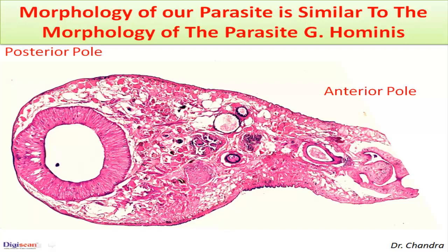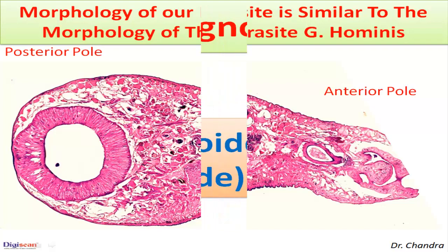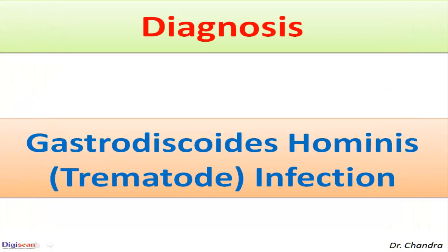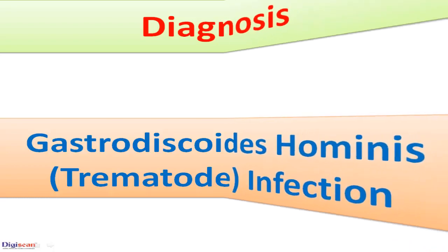Based on the similarity of structure between the two parasites, the diagnosis of Gastrodiscoides hominis was made. This is a trematode located in the intestine.